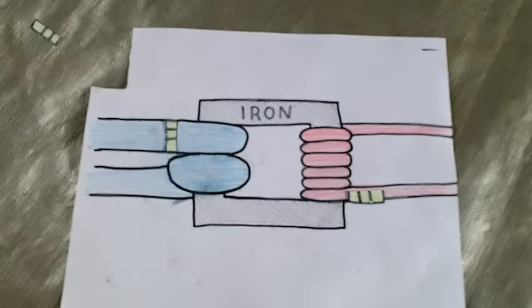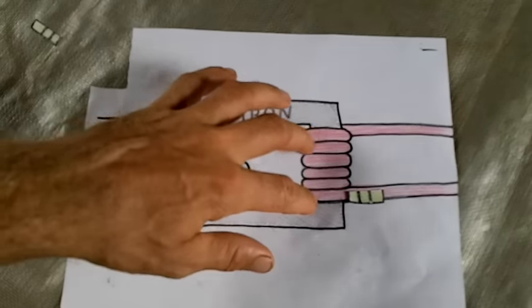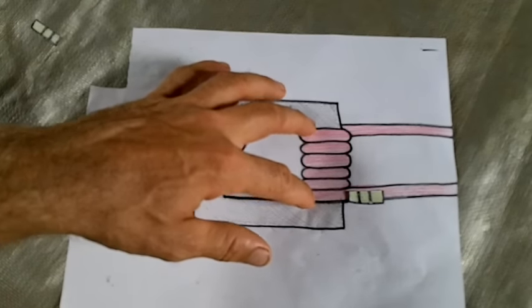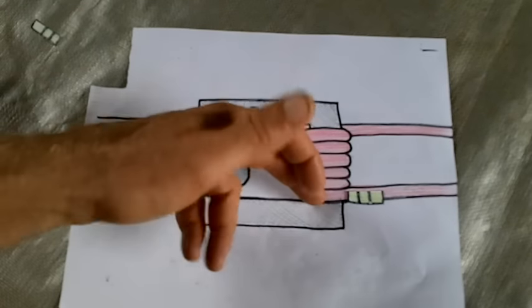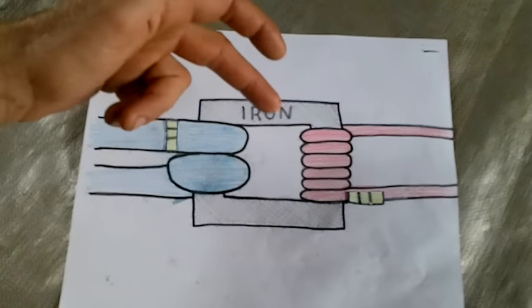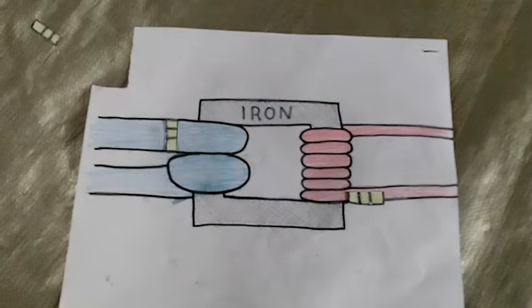And it works the same going the opposite direction. So if you've got three times as many coils here, you switch everything by a factor of three. If you've got 20 times as many coils over here, you switch everything by a factor of 20. And that's about it. There isn't much more to it.